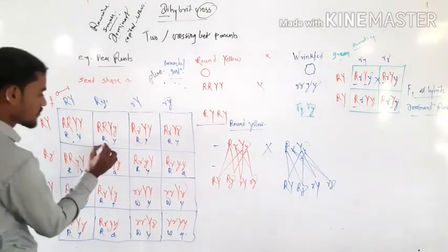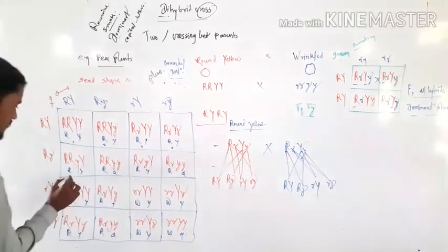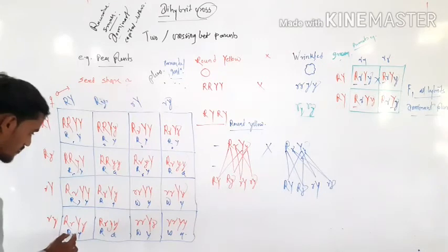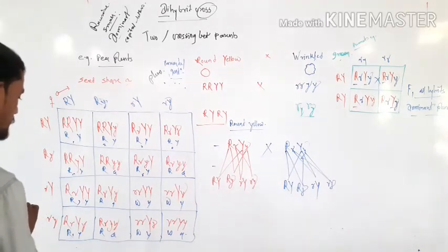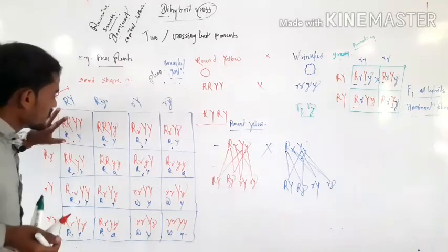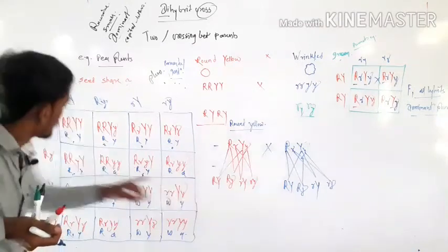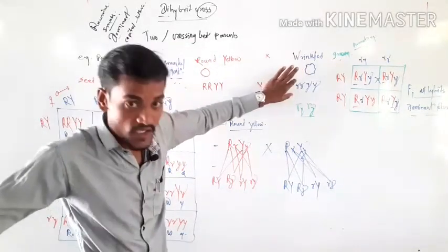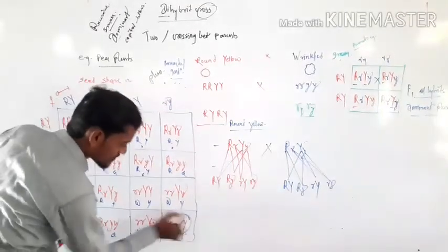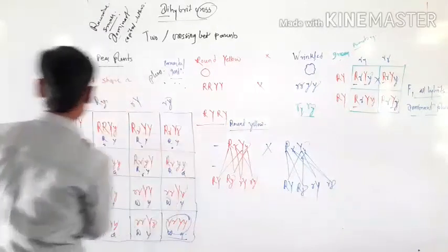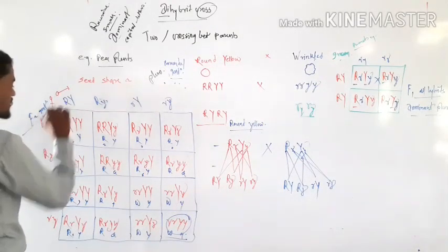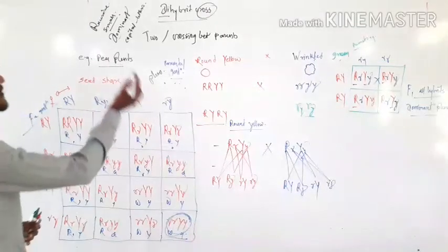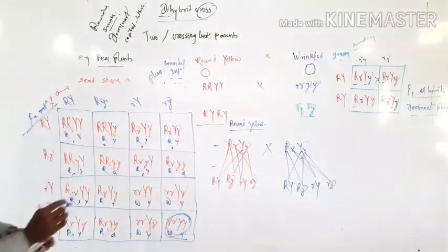Counting the ratio in the Punnett square: round yellow is 1, 2, 3, 4, 5, 6, 7, 8 — 9 total. Capital R Capital Y dominant character is present, and wrinkled green with small r small r small y small y is present in the last one square. So wrinkled green appears in F2 generation — the recessive character reappears in F2 generation.